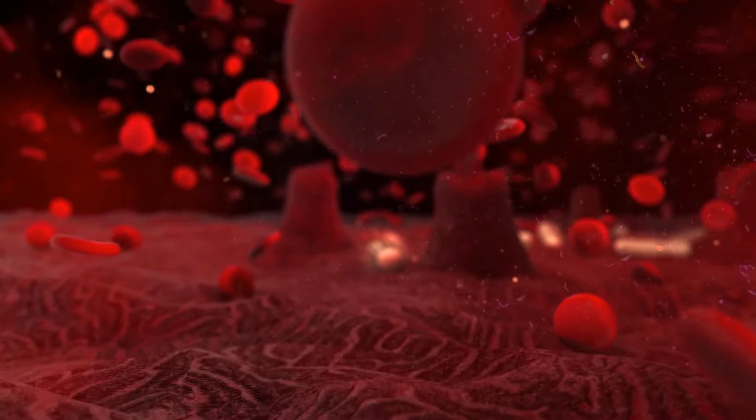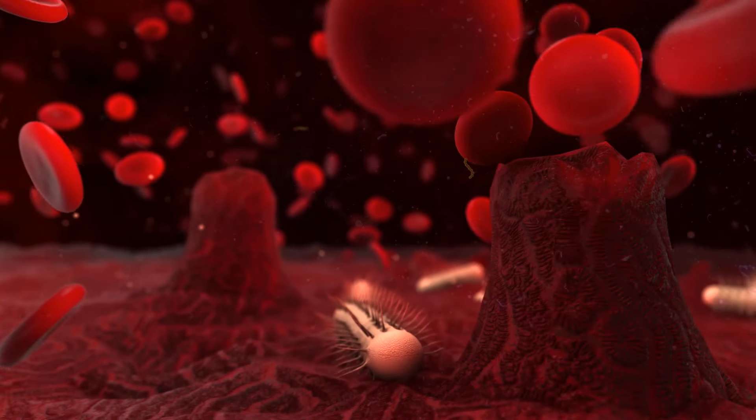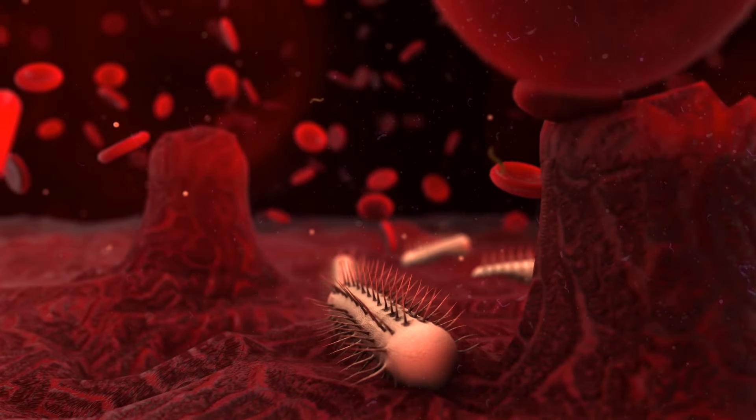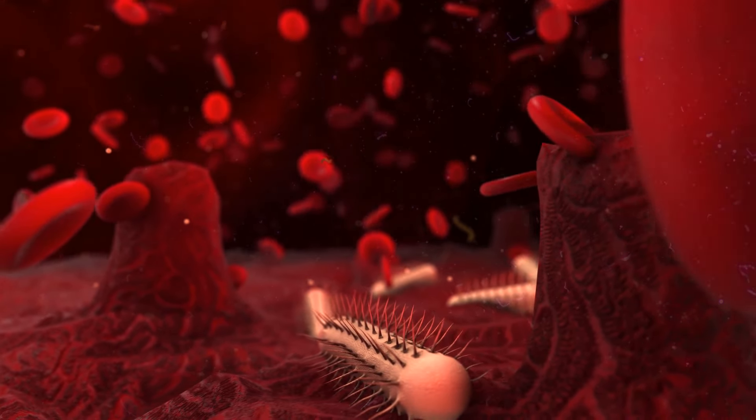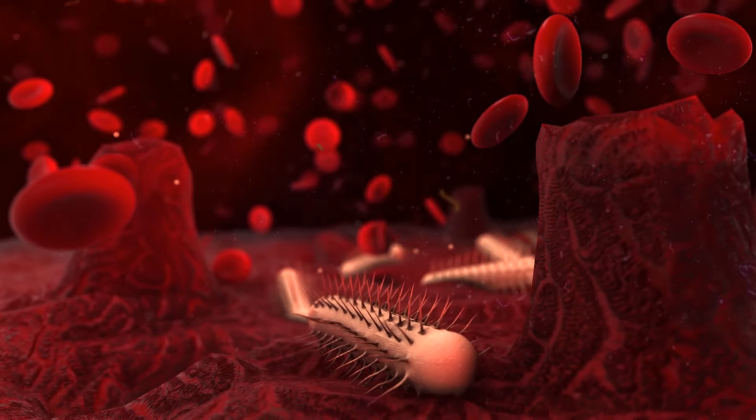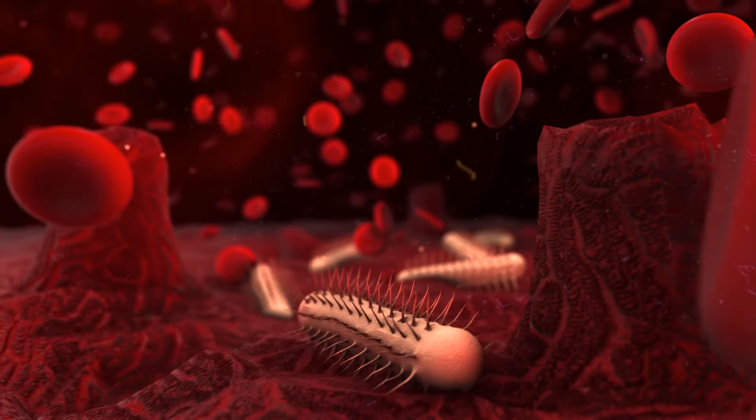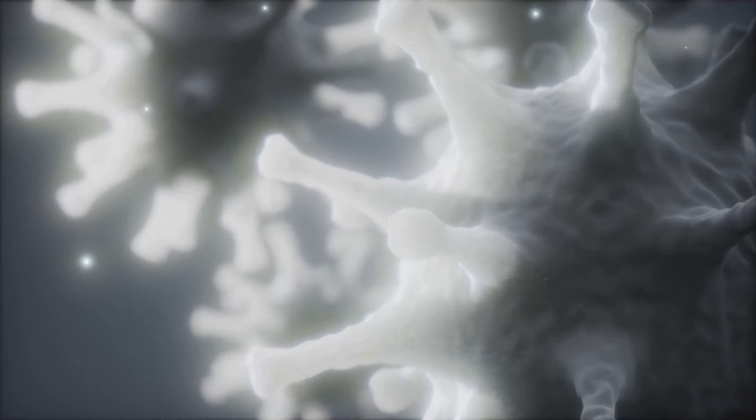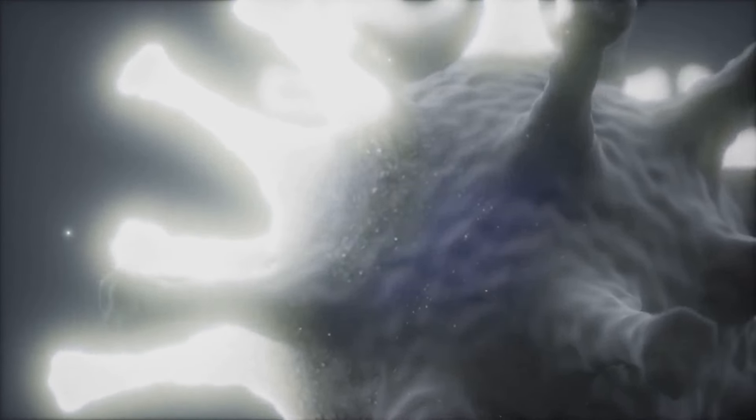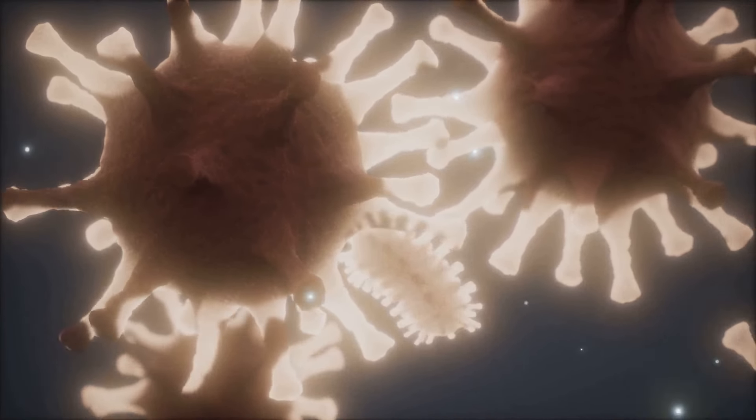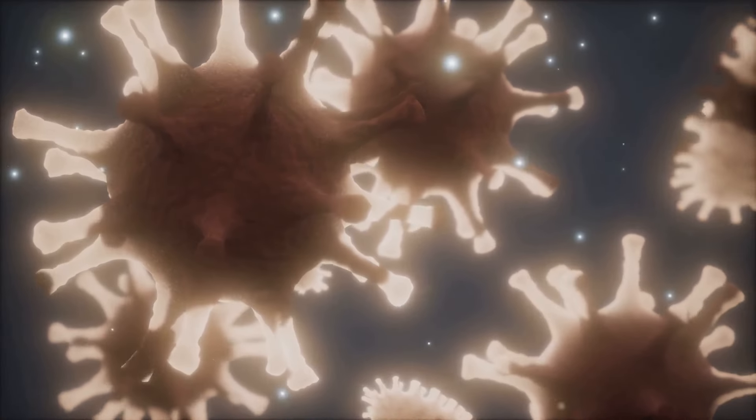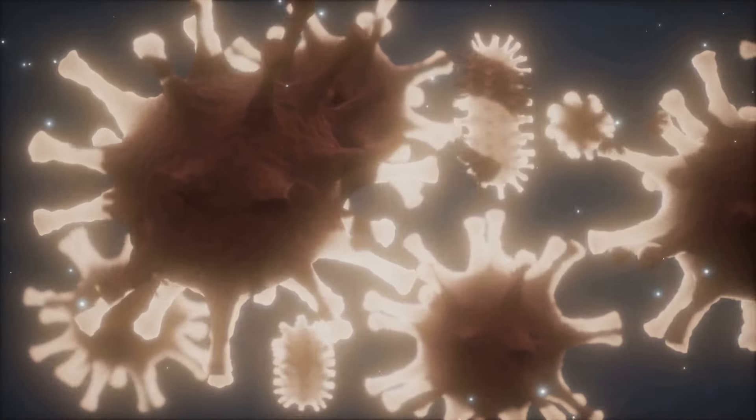In those early days, Earth's atmosphere was a hostile place, devoid of the oxygen we take for granted today. But these early microorganisms were hardy survivors, thriving in environments where other life forms would find impossible to exist. They were anaerobic, meaning they did not require oxygen to live. Instead, they relied on other chemicals like methane, ammonia or hydrogen for their metabolic processes.